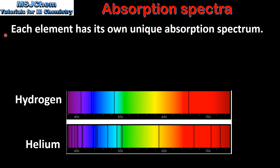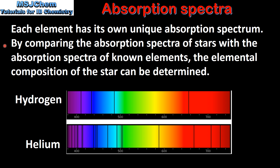Each element has its own unique absorption spectrum. Here we can see the absorption spectra for hydrogen and helium. By comparing the absorption spectra of stars with the absorption spectra of known elements, the elemental composition of the star can be determined.